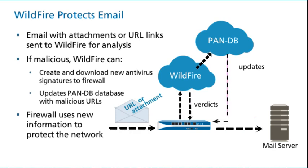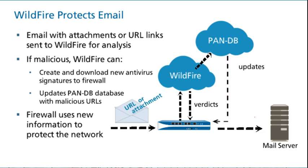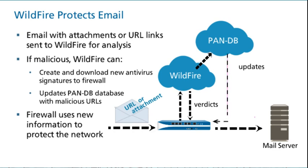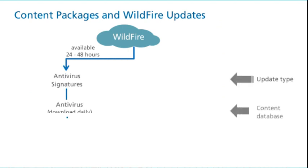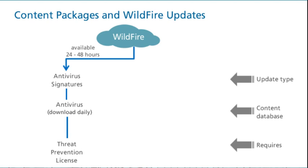If User-ID matches a name in the Wildfire log, the log's email header section contains a link. If you click the link, the ACC tab opens, filtered by the user or group of users. The Wildfire analysis is used to create new antivirus signatures. It also is used to update the URLs and URL categories listed in the PanDB URL filtering database.